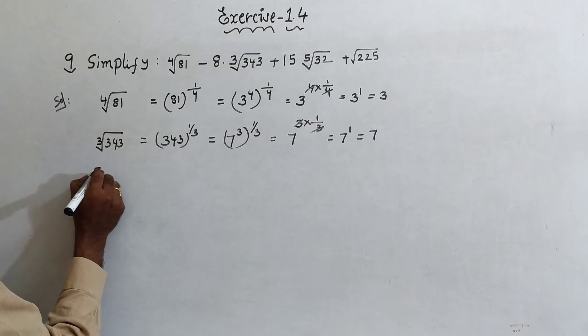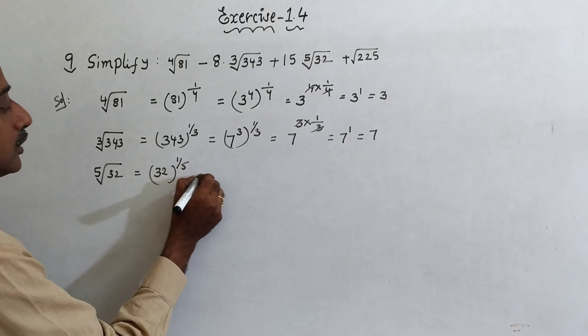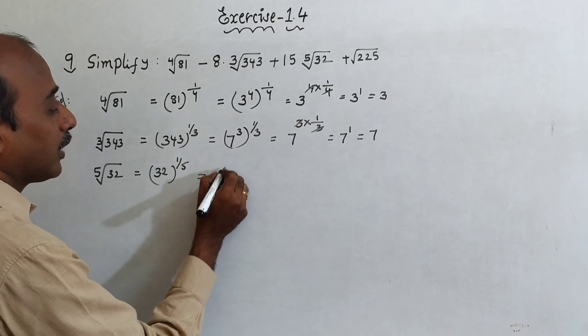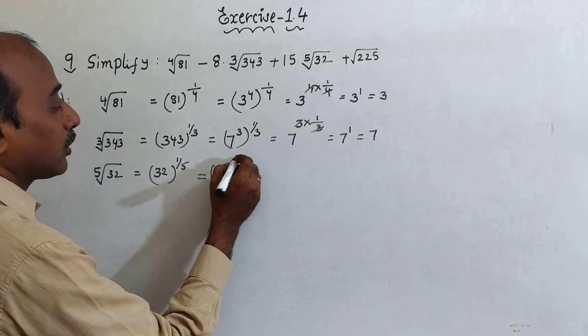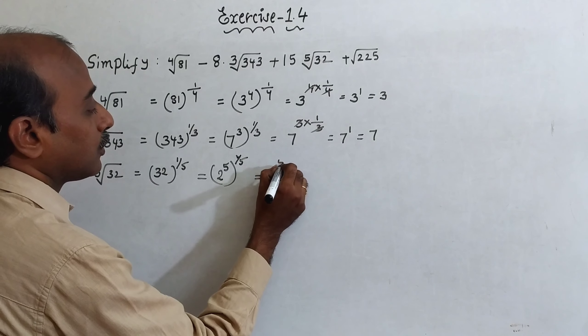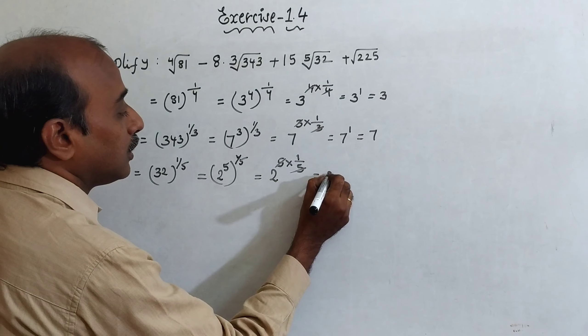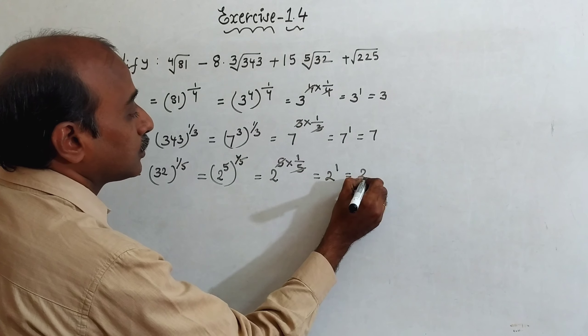Next, 5th root of 32 is equal to 32 all power 1 by 5. 32 you can write 2 power 5, whole power 1 by 5. So, 2 power 5 into 1 by 5, 5 and 5 cancel, 2 power 1, that is equal to 2.